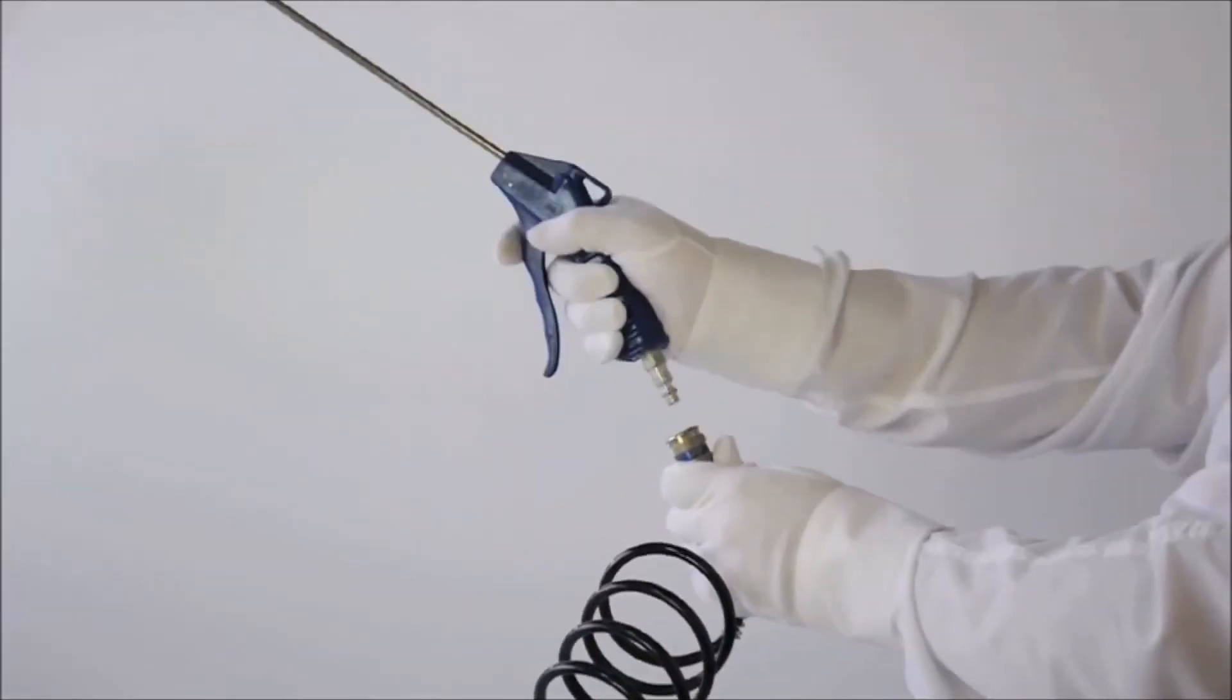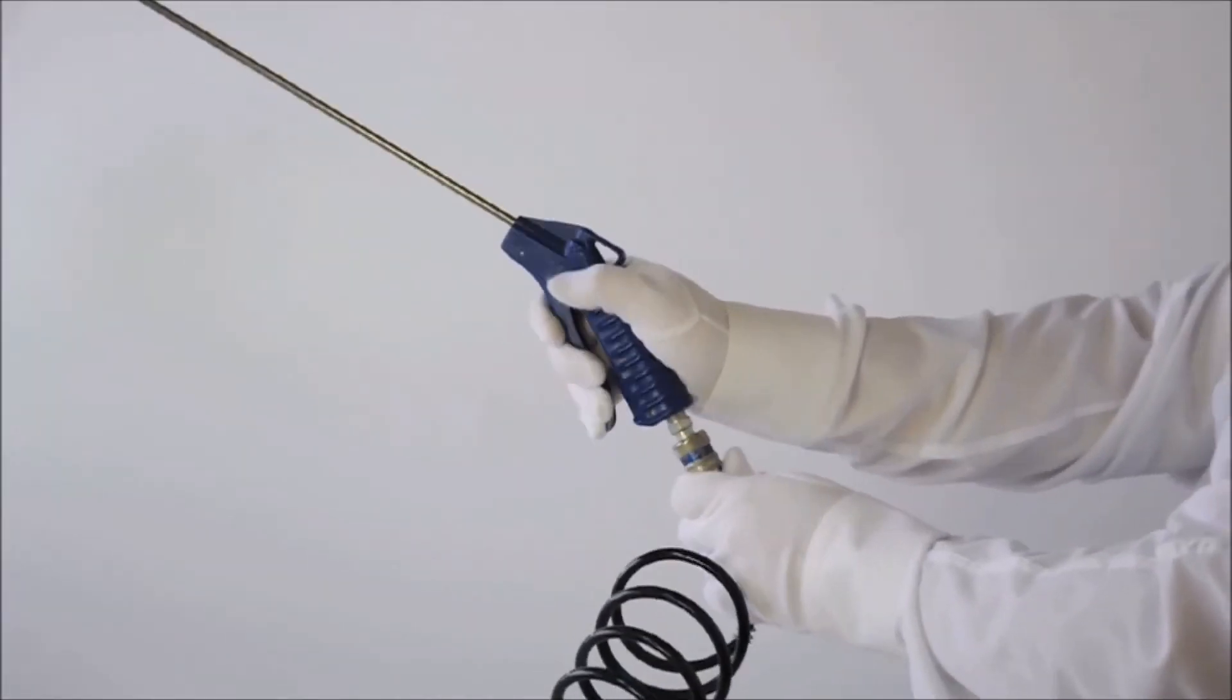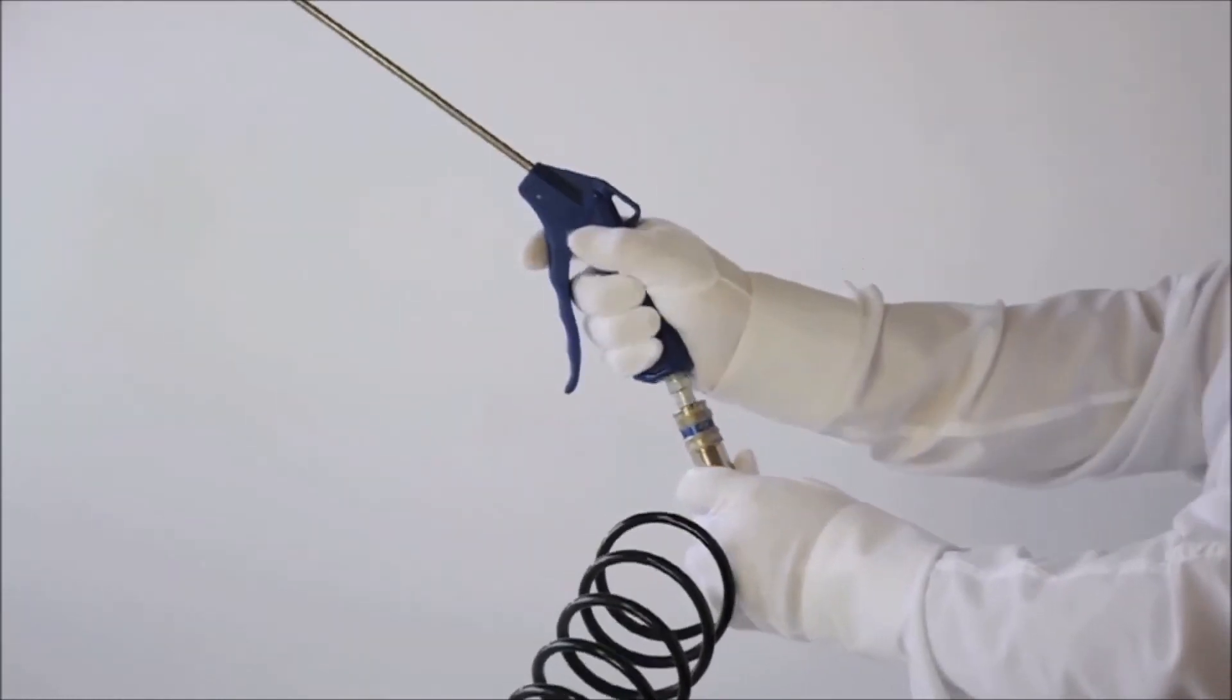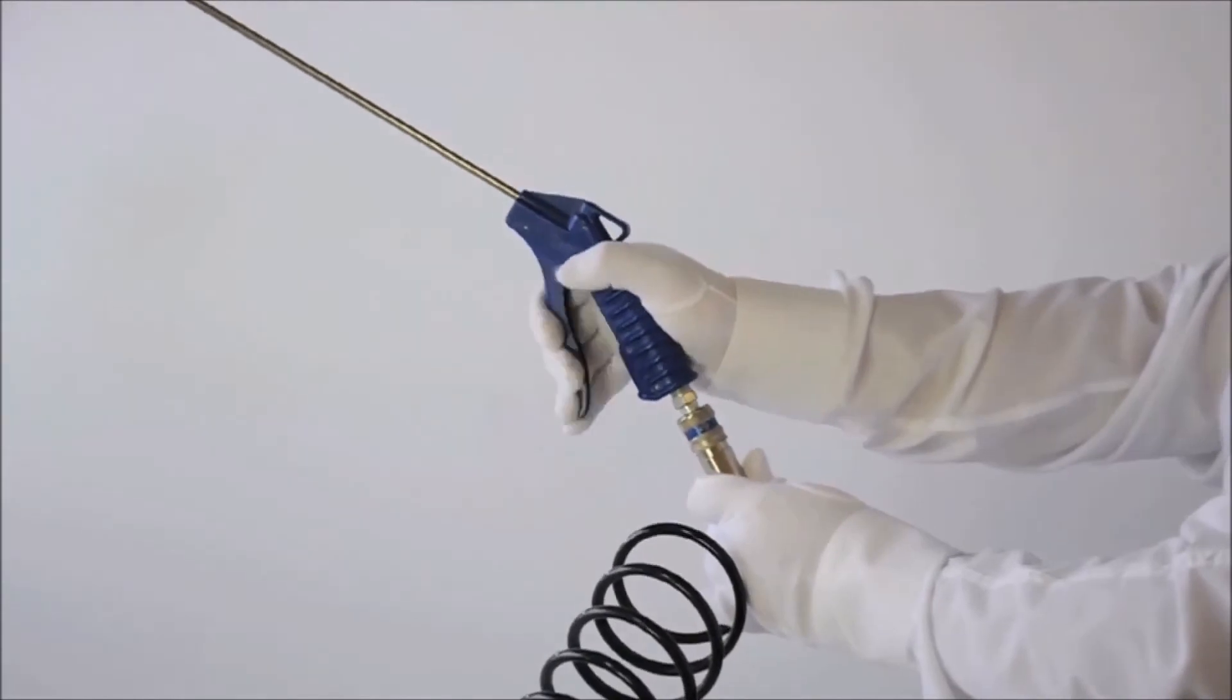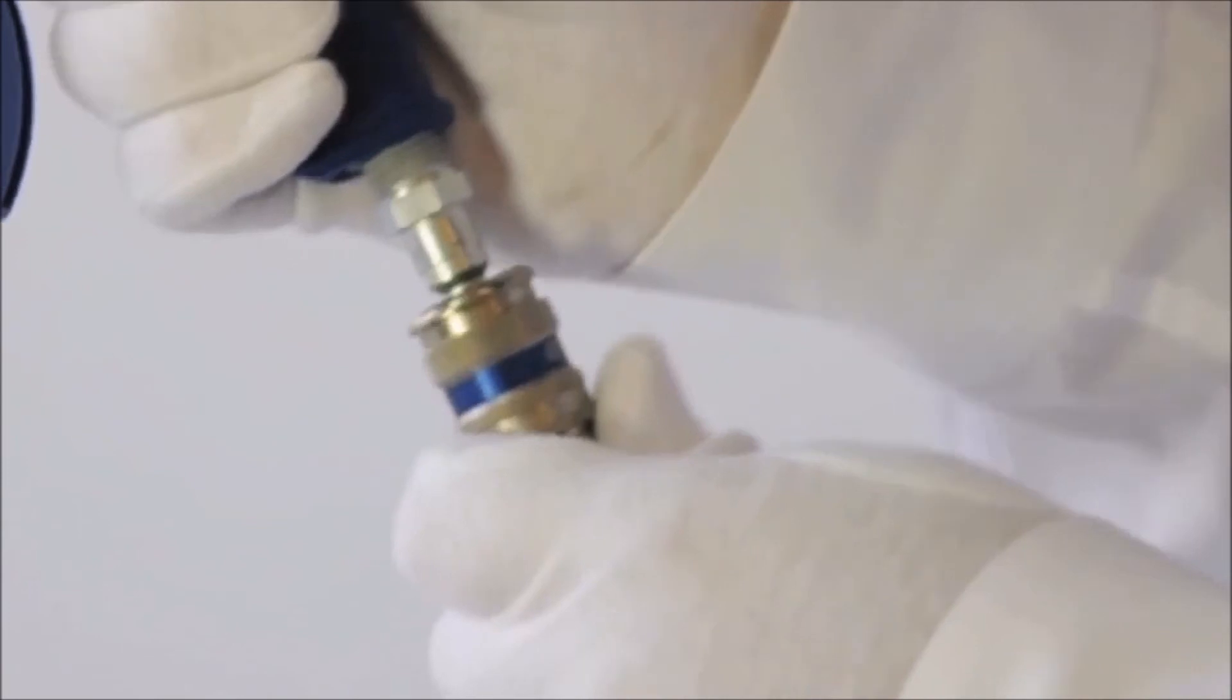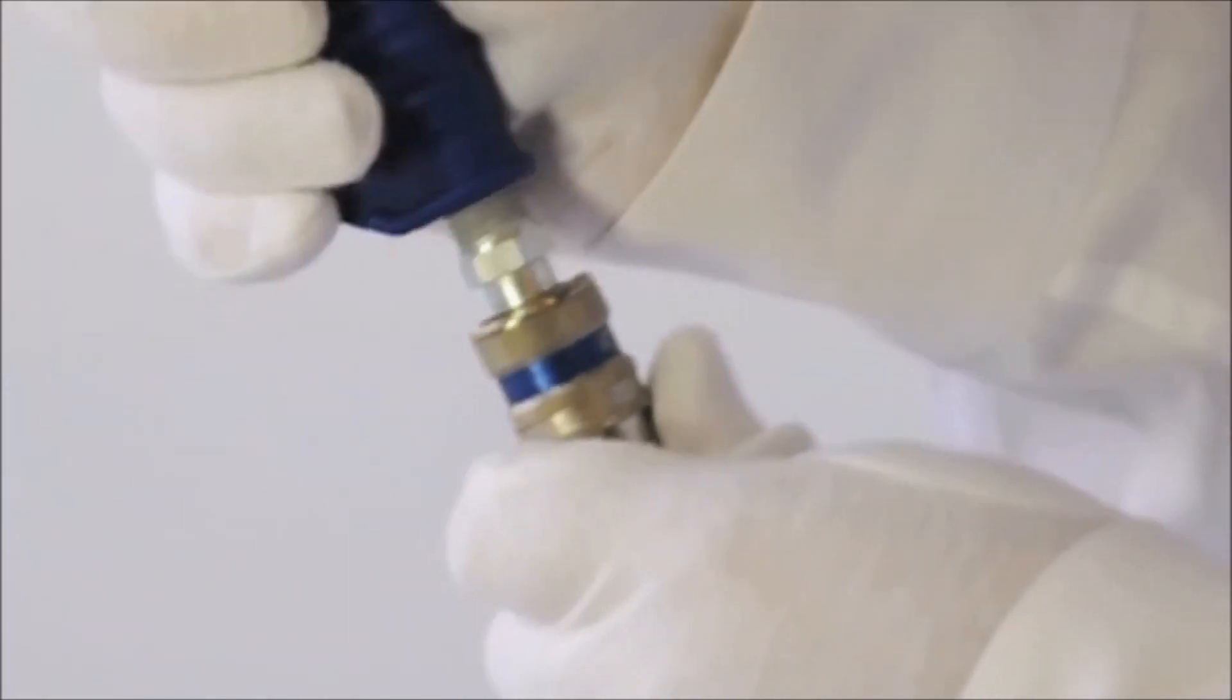Much like we saw in the water hose demonstration, the air nozzles work in the same way. The air compressor is powering this hose now with air instead of the water used in the previous video. The air flows through the quick disconnect coupler and the quick disconnect nipple right into the nozzles, and they can be changed simply and easily, just like before.